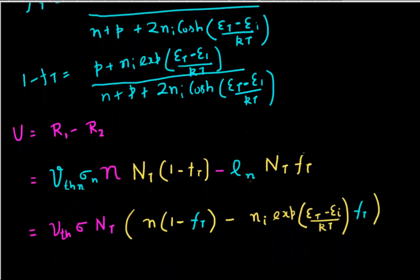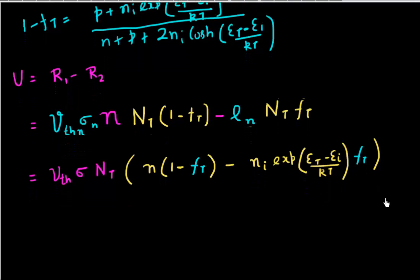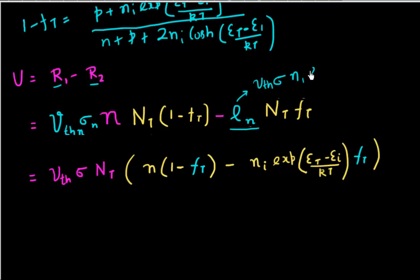Finally, I need to derive my final generation and recombination rate, which equals R1 minus R2. I already know the expressions for both R1 and R2 — they are related to the number of traps, the number of electrons, and the probability of occupation of traps. I further said that my emission coefficient can be related to the capture cross section, so instead I substitute it to be equivalent to Vth·σ·Ni·exp((Et minus Ei)/kT), and I take the common terms out.